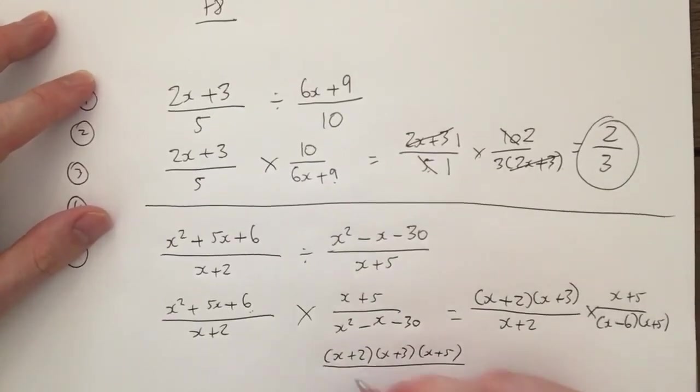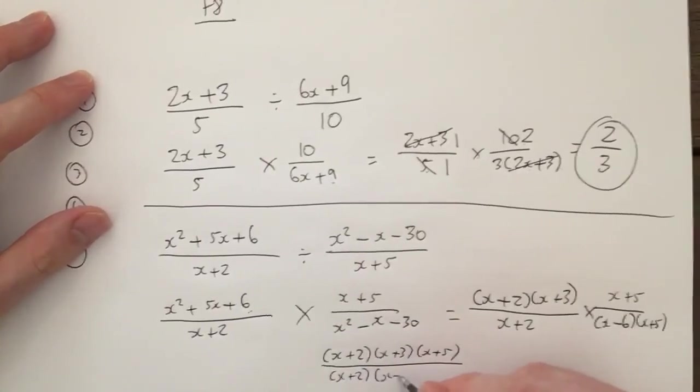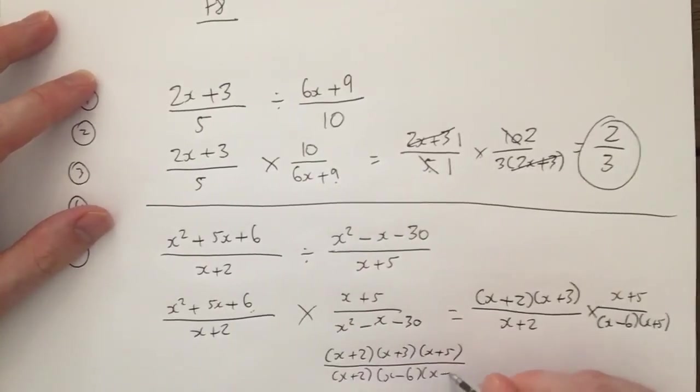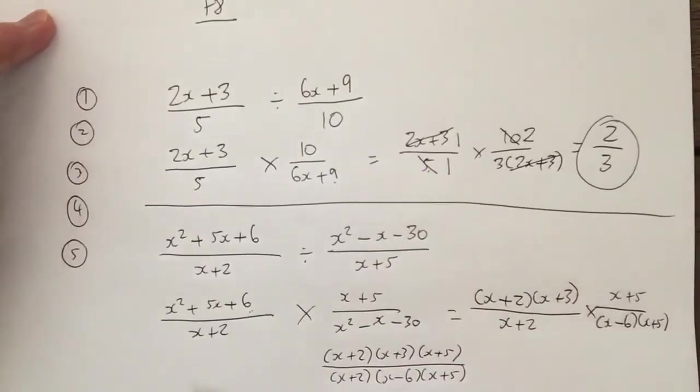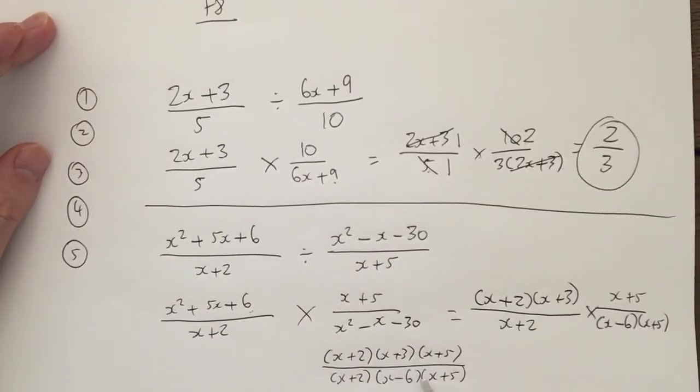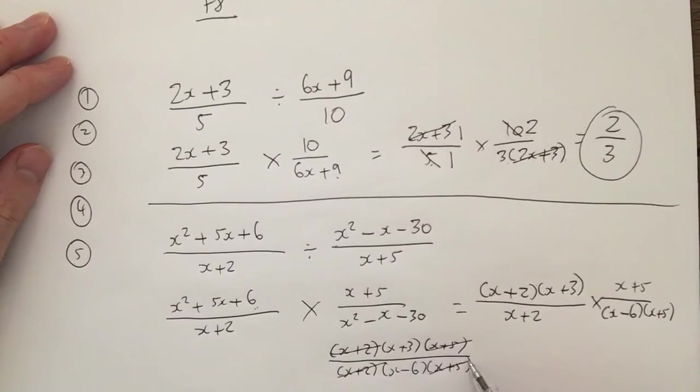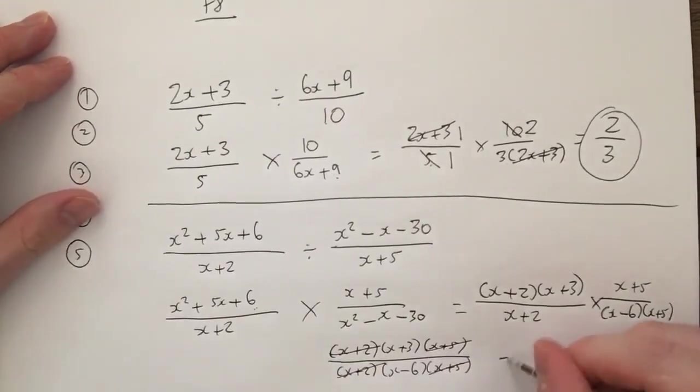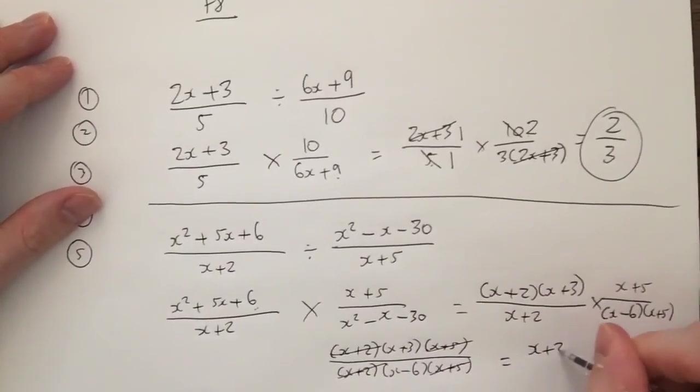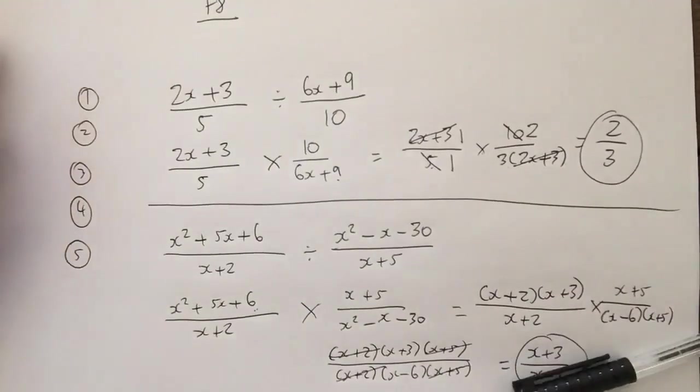And then that would become x plus 2, x minus 6, x plus 5. Remember my last step is, can I simplify further? Now because I've got one fraction here, I can: x plus 2 and x plus 2 cancel out, x plus 5, x plus 5 cancel out. So therefore leaves me with my final answer of x plus 3 over x minus 6. And that's that. Okay, good luck.